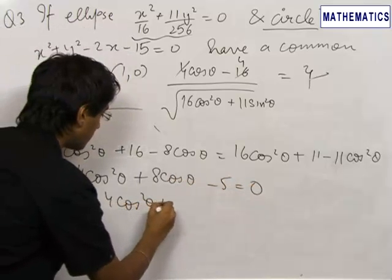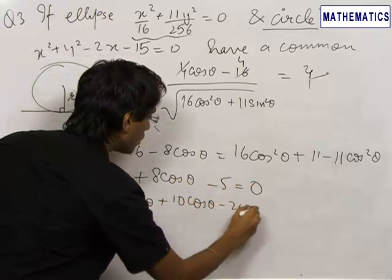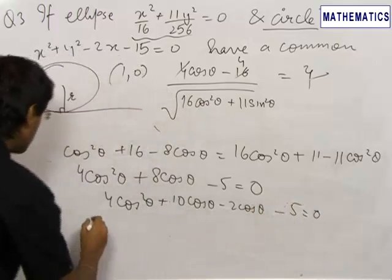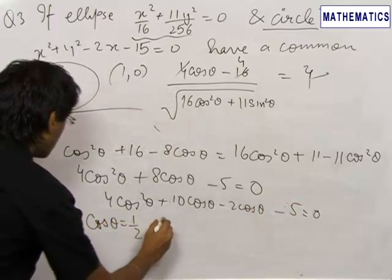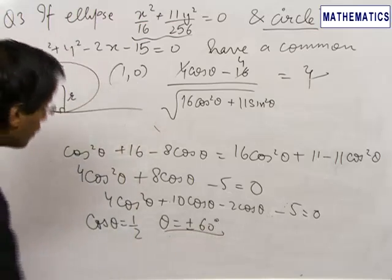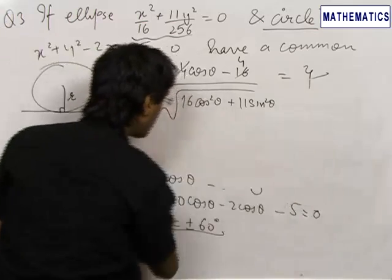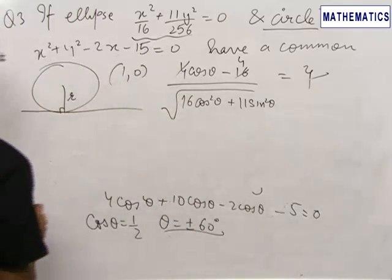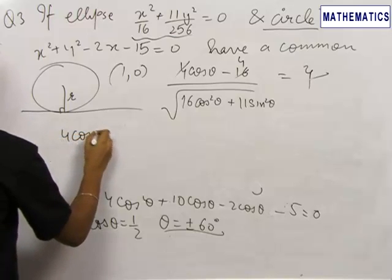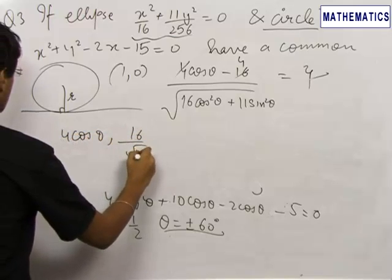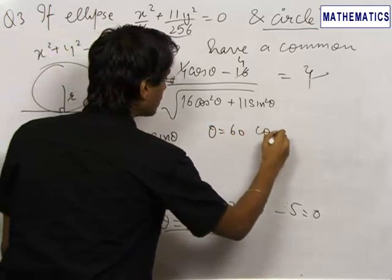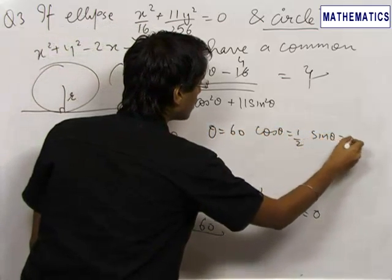The quadratic 4 cos²θ + 8 cos θ − 5 = 0 can be written as (10 cos θ − 2)(cos θ + ...) − 5 = 0, giving cos θ = 1/2, i.e., θ = ±60°. For θ = 60°, cos θ = 1/2 and sin θ = √3/2.